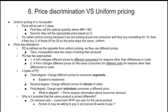First degree price discrimination is very complicated because there's no way for a company to know each individual's willingness to pay. If you know each consumer's willingness to pay, you can plot the demand curve from lowest to highest — but the lowest willingness to pay must still be above the marginal cost, because you're not going to charge someone below your marginal cost. On the demand side, consumers' willingness to pay varies: one person might pay $100 for a t-shirt, another might only pay $5.